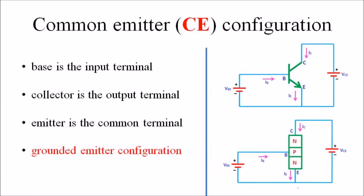The supply voltage between the base and emitter is denoted by VBE, while the supply voltage between the collector and emitter is denoted by VCE. The input current or base current is denoted by IB, and the output current or collector current is denoted by IC. The common emitter amplifier has medium input and output impedance, so the current gain and voltage gain are medium. However, the power gain is very high in this configuration.